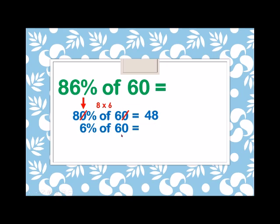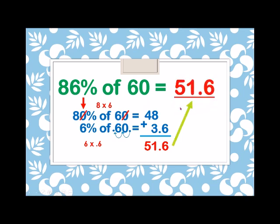And then, the 6% of 60. So, the decimal point of 60, moving it to the left two places, we have 0.6. Therefore, 6 times 0.6 is equals to 3.6. Adding these two numbers, we have 51.6. Therefore, the 86% of 60 is equals to 51.6.